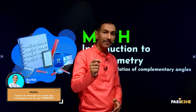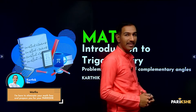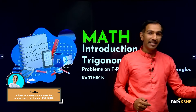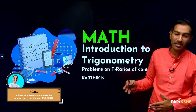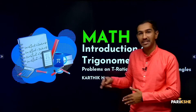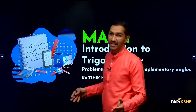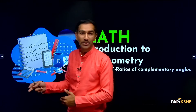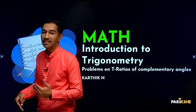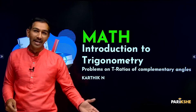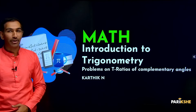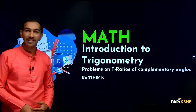Let's look at the complementary angles formulas: sin(90 - θ) = cos, cos(90 - θ) = sin, sec(90 - θ) = cosec, cosec(90 - θ) = sec, tan(90 - θ) = cot, cot(90 - θ) = tan.